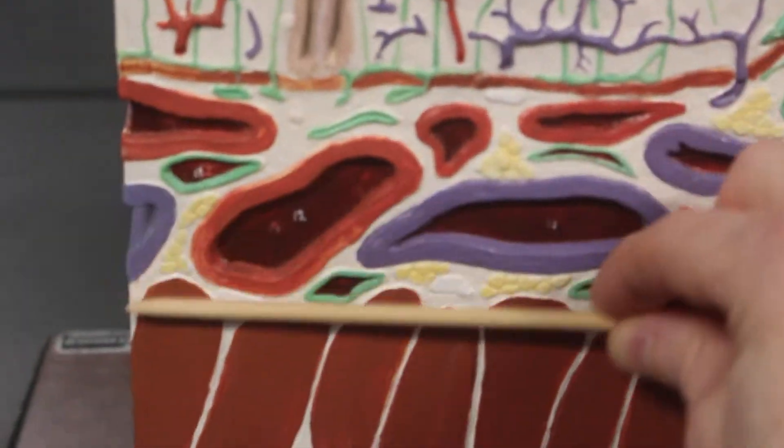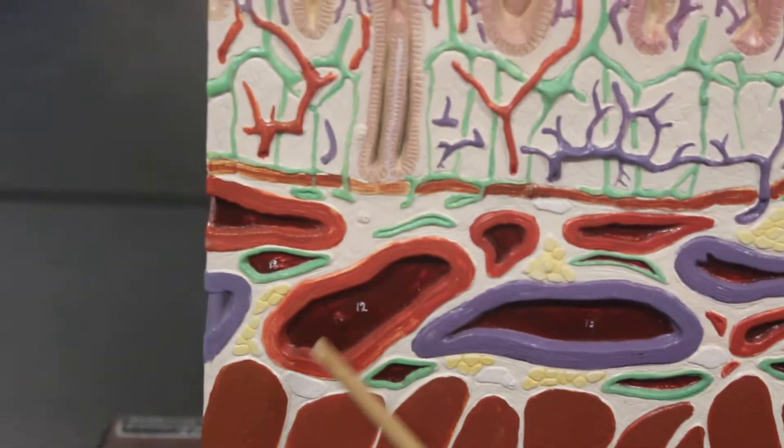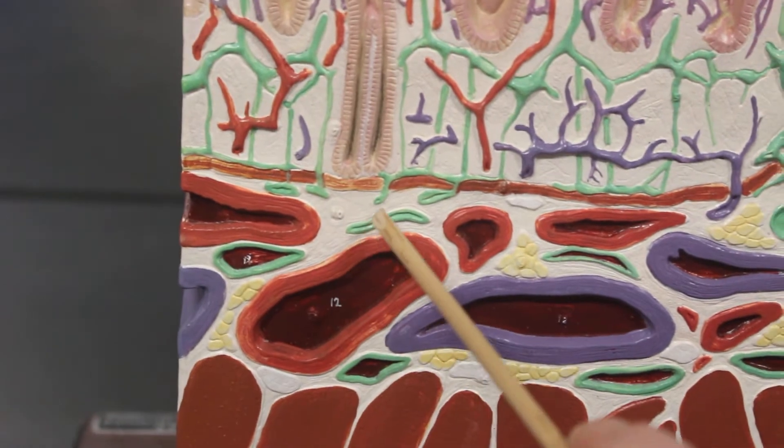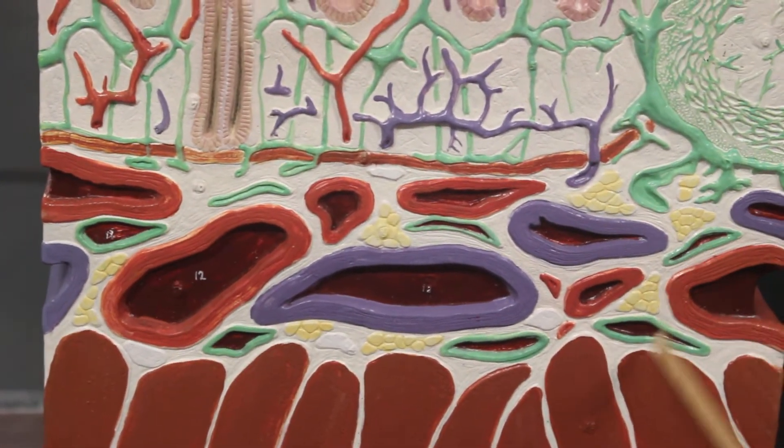From here to here is the submucosal layer. In the submucosal layer, we can see the veins in purple, the arteries in red, and in green are the lymph vessels. These are lymph vessels.